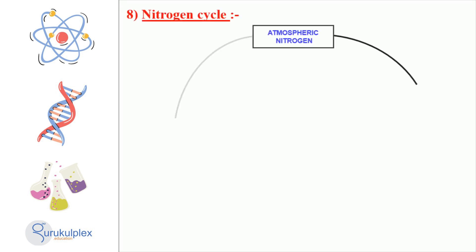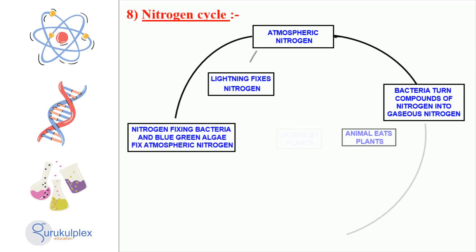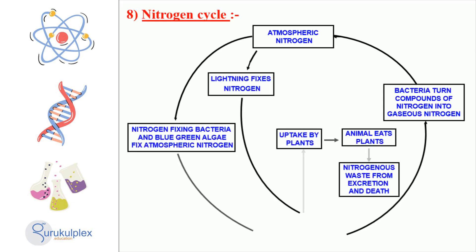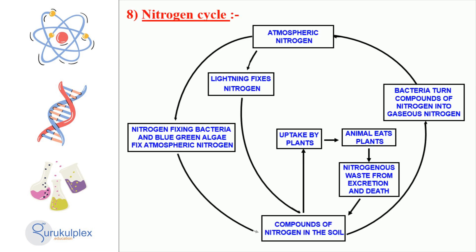Nitrogen is an essential element for life on Earth. Every organism requires nitrogen for survival, and the nitrogen cycle ensures an abundance of nitrogen compounds for all forms of life. Lightning helps transform nitrogen from the atmosphere into nitrogen compounds in the soil, which are then absorbed by plants. These plants are then consumed by animals. Finally, nitrogenous waste from excretion and death is decomposed by bacteria, reverting it back to a gaseous nitrogen form, completing the cycle.